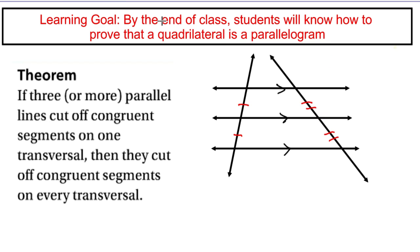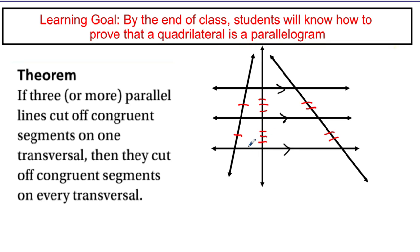I can do this for as many transversals as I want. If I draw one straight down the middle and measure that distance, it's not necessarily the same as the other transversals, but whatever that distance is, the spacing between the second two parallel lines will also be the same. This works for as many transversals as we want — if we draw several parallel lines and the spacing between them is equal, then every transversal we draw will have that same property.